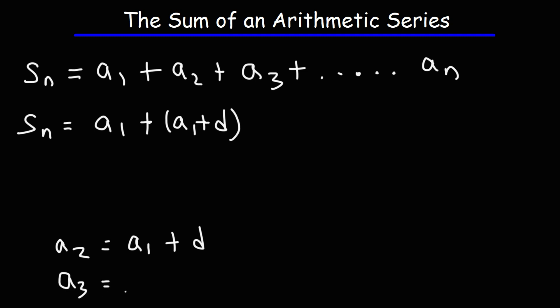Now if we want to get the third term from the first term, we need to add two common differences. 3 minus 1 is 2. So the third term is going to be a sub 1 plus 2d. And then this pattern will continue to repeat until we get to the last term.